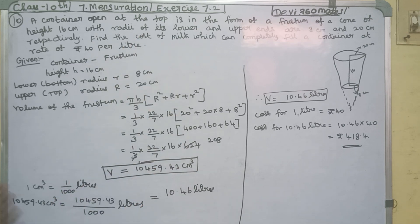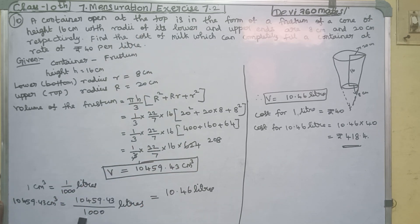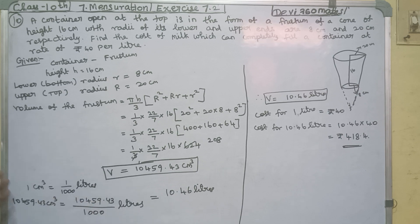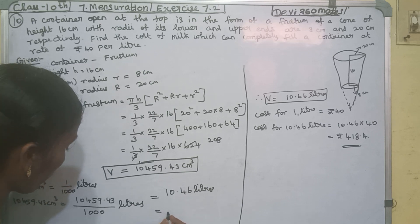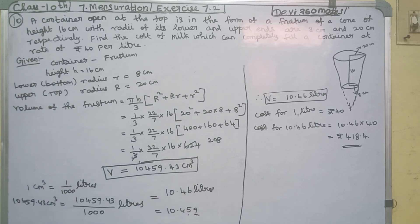The answer is 10.459 liters. We round it to 10.46 liters. The container can store 10.46 liters of milk.